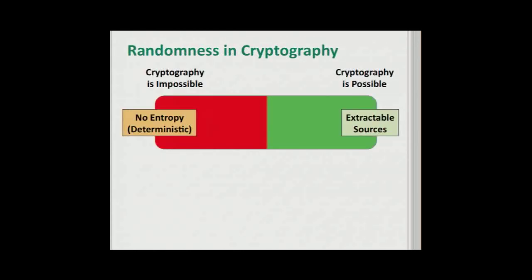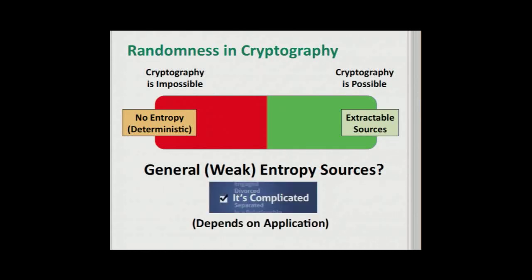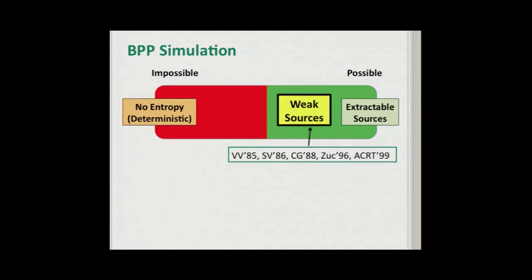Let's go back and look at what we can do in terms of cryptography depending on the source. We know that it's possible to do cryptography with extractable sources, and impossible if our source has no entropy. But where do general weak entropy sources fall in this categorization? The answer is that it's complicated — it depends on the application. For BPP simulation, a series of works have shown that weak sources are enough to simulate BPP algorithms.